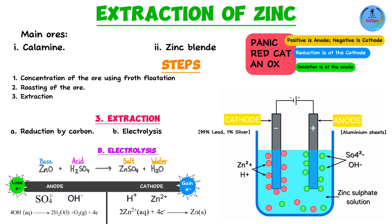If graphite electrodes were used, hydrogen ions would be discharged at the cathode instead of zinc ions, because zinc is higher than hydrogen in the electrochemical series — meaning hydrogen ions have a greater tendency to gain electrons than zinc ions. Since we want zinc metal, the cathode made of 99% lead and 1% silver is specifically used to ensure zinc ions are discharged and zinc metal is deposited rather than hydrogen gas.